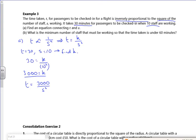So that's my equation. So then it says B, what's the minimum number of staff working to keep you under 60 minutes? So I want the time to be less than 60. So I want the 3,000 over S squared to be less than or equal to 60. There. So I want that to be less than 60 minutes.